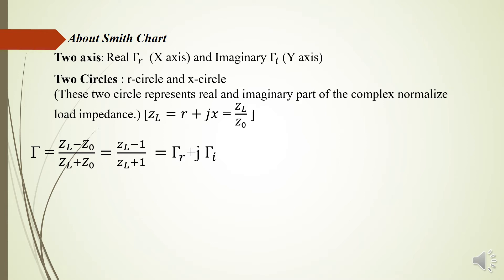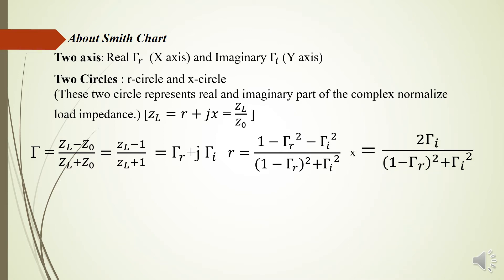The reflection coefficient can also be represented as a complex quantity: Rho_R plus j Rho_i. By replacing the normalized load impedance z_L with r plus jx in both numerator and denominator, and equating real and imaginary parts separately, we can find that small r equals (1 minus Rho_R squared) divided by (1 minus Rho_R) squared plus Rho_i squared, and small x equals 2*Rho_i divided by (1 minus Rho_R) squared plus Rho_i squared.